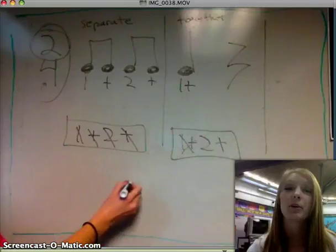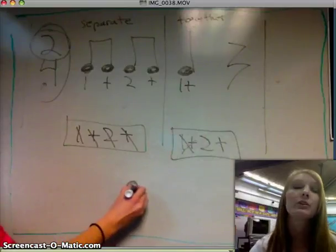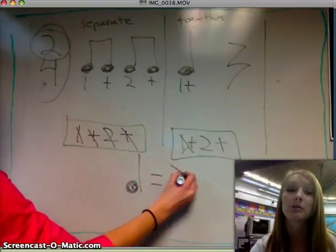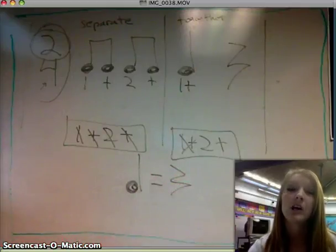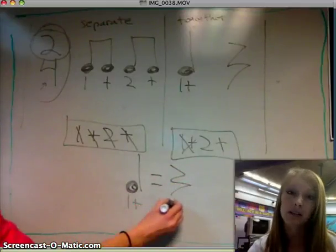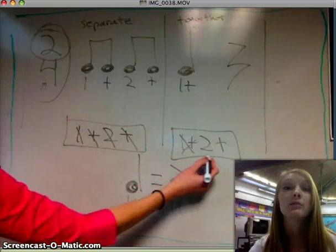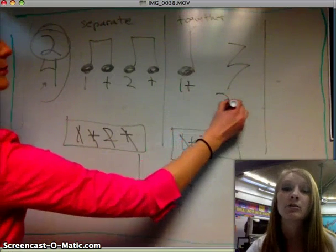The next symbol here is a quarter rest. In order to figure out how to count that rest, we need to remember that a quarter note is equal to a quarter rest. So if a quarter note gets 1 AND, a quarter rest will get 1 AND. Now in this case, we've already used the 1 AND, so we go right to the 2 AND.